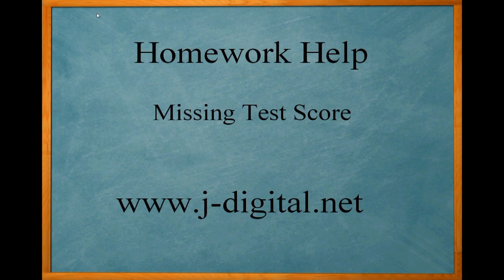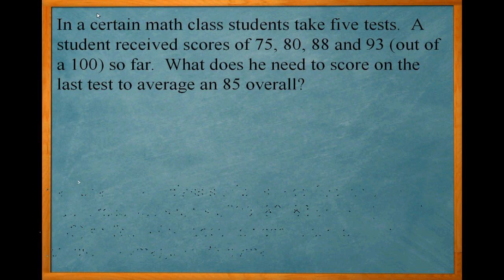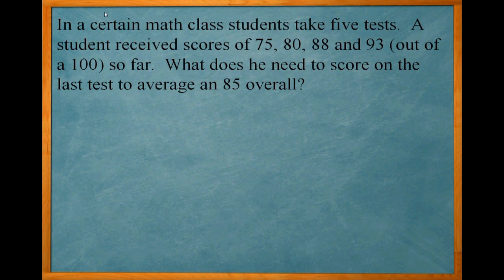This problem involves finding a missing test score. In a certain math class students take five tests. A student receives scores of 75, 80, 88, and 93 so far. What does he need to score on the last test to average an 85 overall?